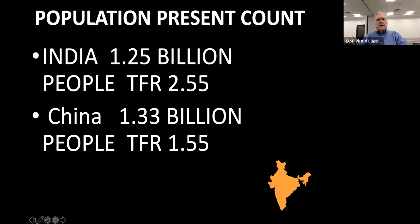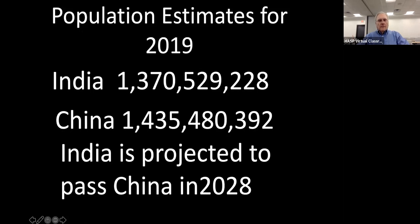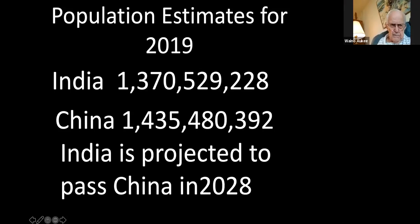China is at 1.3 billion people and their TFR is a little lower. As a consequence, in 2019 India was at 1.3 billion and China at 1.4 billion. It is projected that India will pass China in 2028 — well, that's because China is trying to have only one baby.